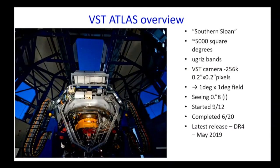This is the VST — the VLT Survey Telescope — a 2.6-meter telescope with a one square degree field and 0.21 arcsecond pixels. The camera is OmegaCAM, used by both KiDS and ATLAS. You could regard ATLAS as a sort of southern SDSS: it was designed to cover something like 5,000 square degrees of the southern sky to roughly the same g = 22.5 magnitude limits as SDSS in the north, using the same ugriz bands.